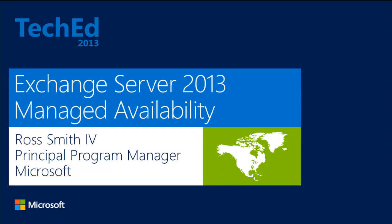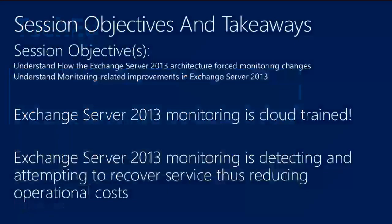So hopefully you're all here to learn about managed availability. If you're not, the doors are back there. We're going to talk about two key areas today. Number one is why we changed our monitoring story in Exchange 2013, what architectural changes we introduced into the product, how they drove us to a new monitoring story, and then we're going to delve into what those monitoring-related improvements are. The end result will hopefully be that our monitoring capabilities in Exchange 2013 provide a great deal of recovery-oriented computing, which will hopefully reduce the operational costs in the environment, as the system will hopefully recover itself as opposed to forcing you guys as administrators to do a majority of that work.